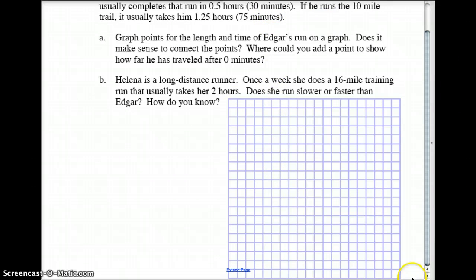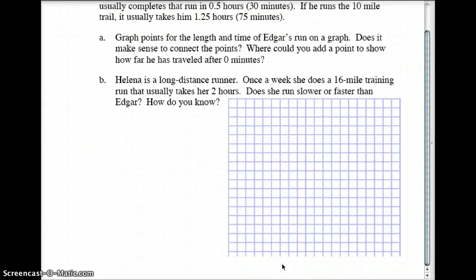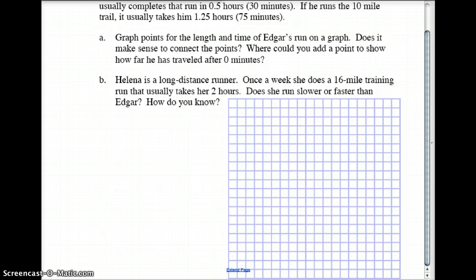So on here, make sure you use equal intervals. You're going to graph on here four miles in 30 minutes. Okay, what I suggest you do is put these increments of time, the time going across the bottom.